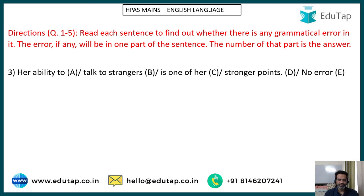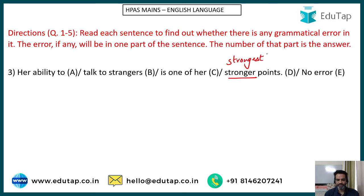Question number three: 'Her ability to talk to strangers is one of her stronger points.' What is the error here? It should be 'one of her strongest points.' 'Stronger' is used for comparison between two things. If there is no second or third person being compared, there cannot be a comparison — so 'stronger' is incorrect here and 'strongest' is the correct form. That is the error in this sentence.